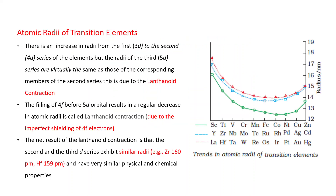If we go from top to bottom in a group, atomic radii generally increase. There is an increase in radii from the first to the second series, that is from the 3d series to the 4d series. But the radii of the third series (5d) are virtually the same as those of the corresponding members of the second series (4d), and this is due to lanthanoid contraction. So from 3d to 4d size increases, but from 4d to 5d the size is almost the same.